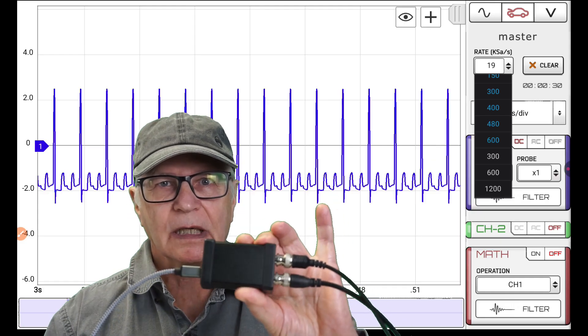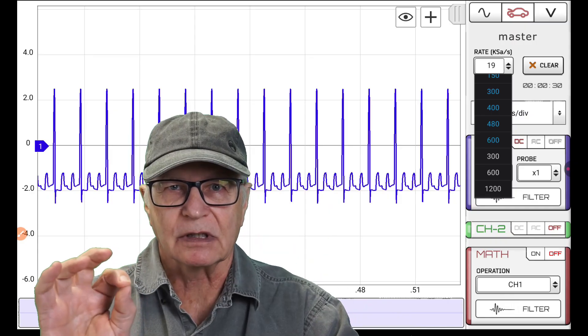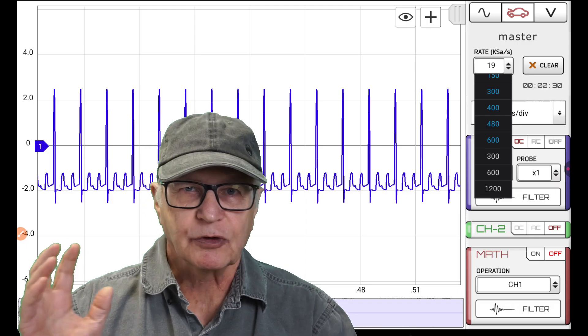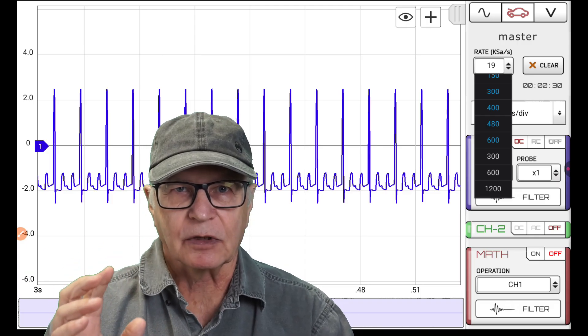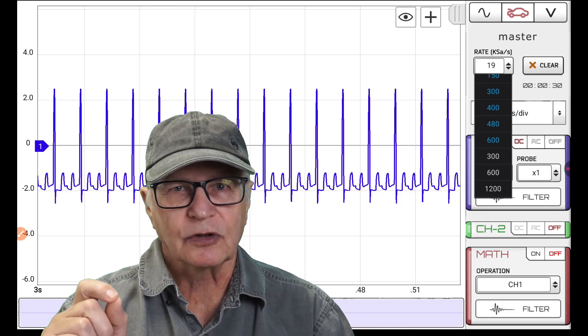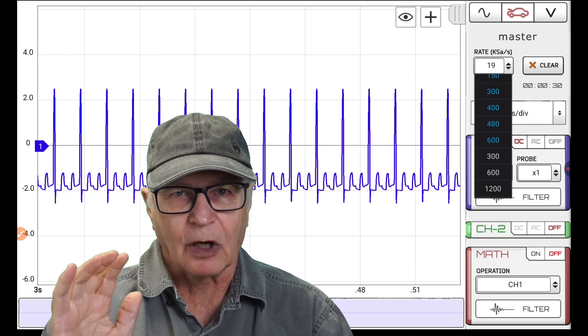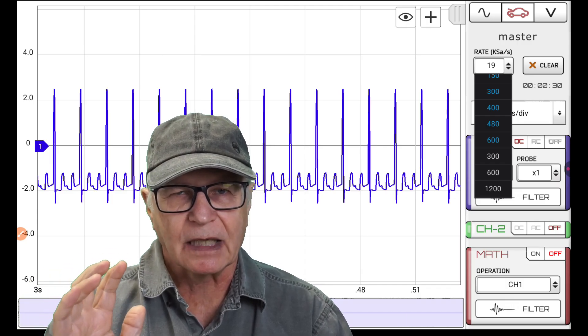Which has a very generous automotive streaming rate of 600 kilobytes per second. Typical oscilloscopes that are supported by H-scope for this automotive mode, they top out at about 125 kilo samples per second.